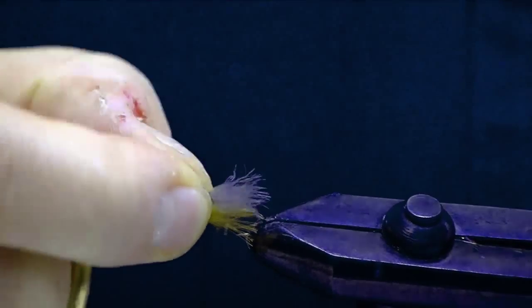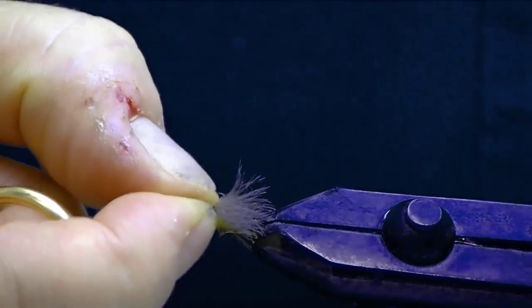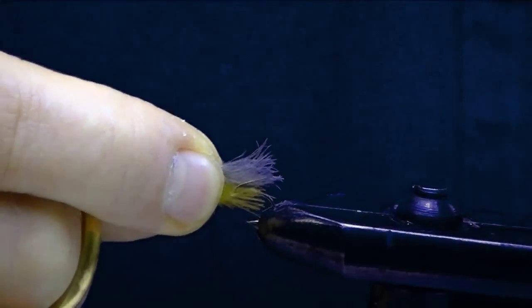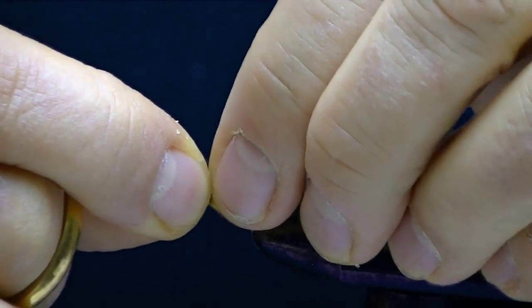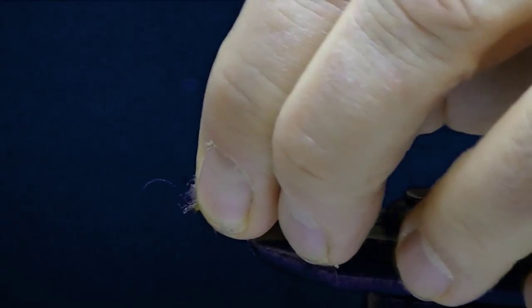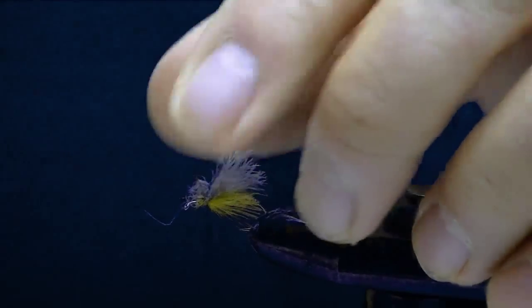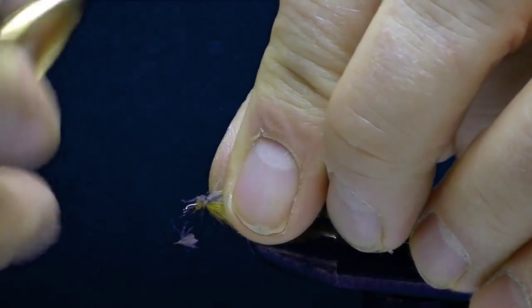So again if you look at this you'll see I'm putting that little underwing on there. That's going to go underneath the elk wing that I'm going to do. This adds a ton of buoyancy.